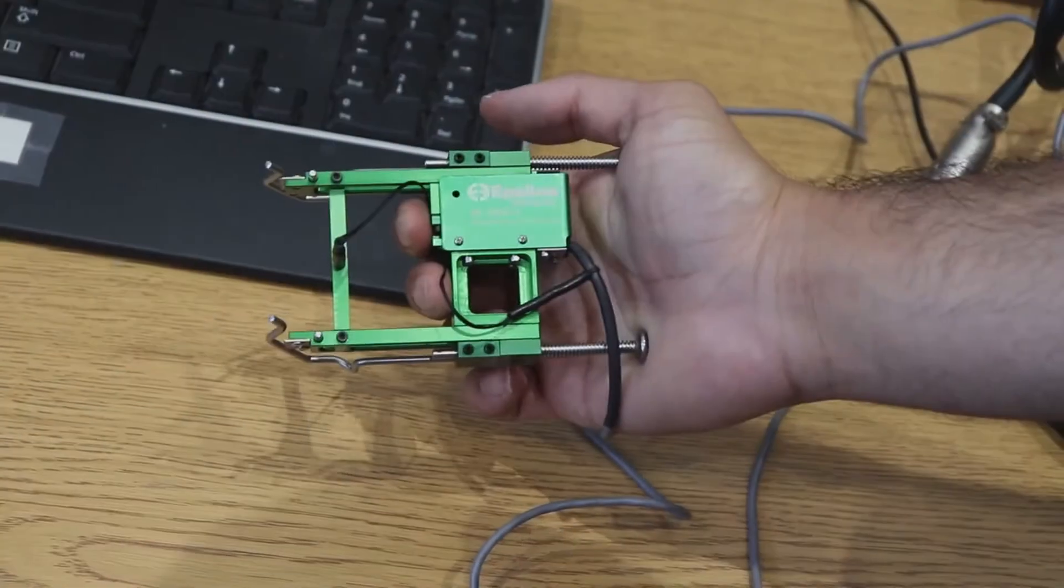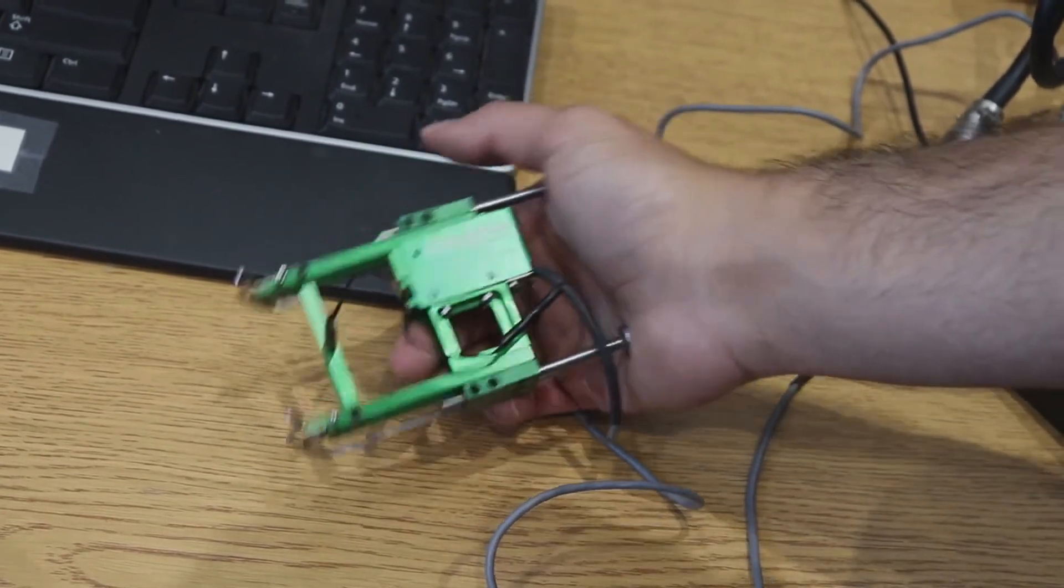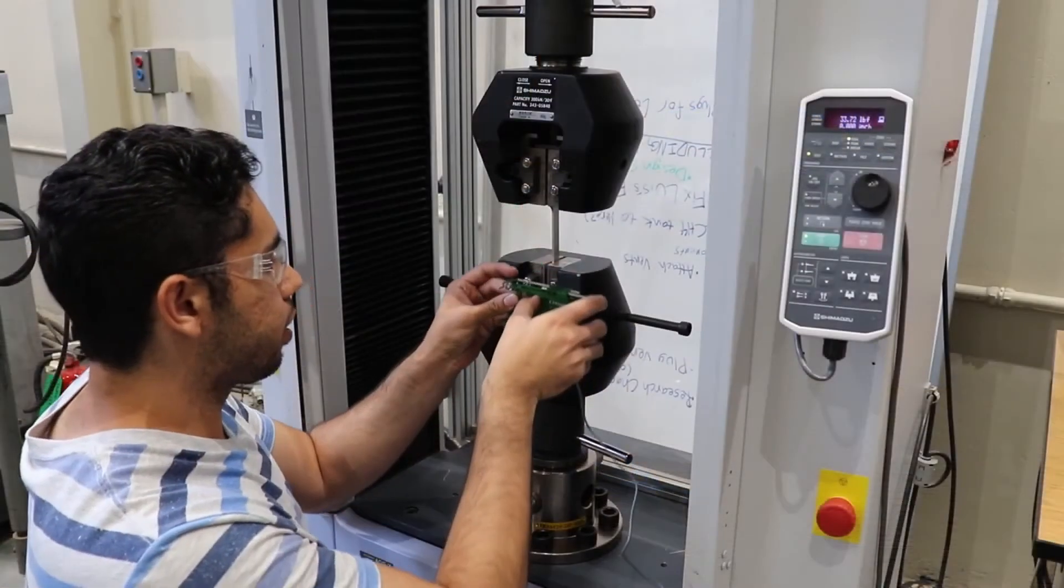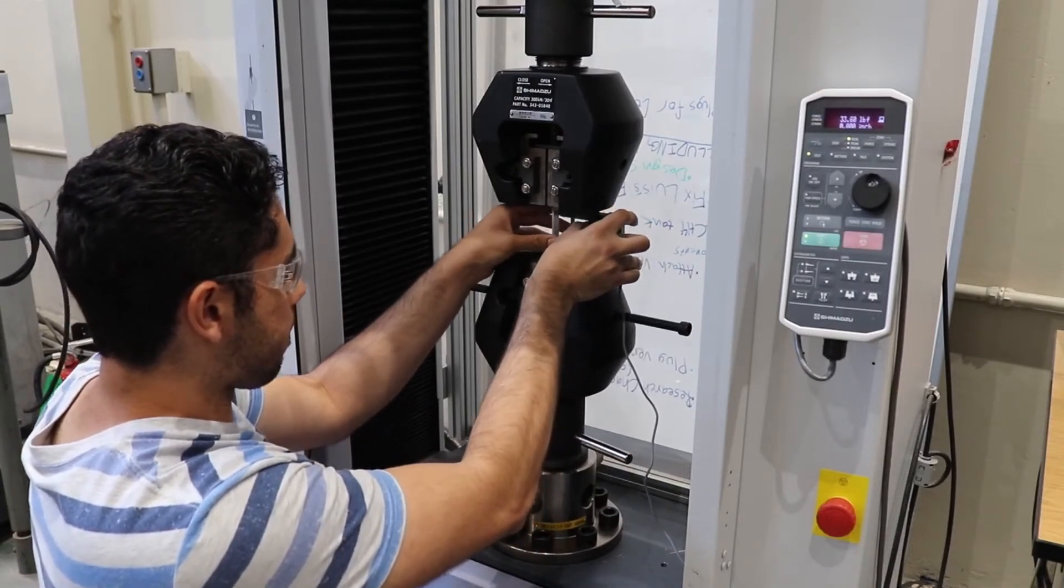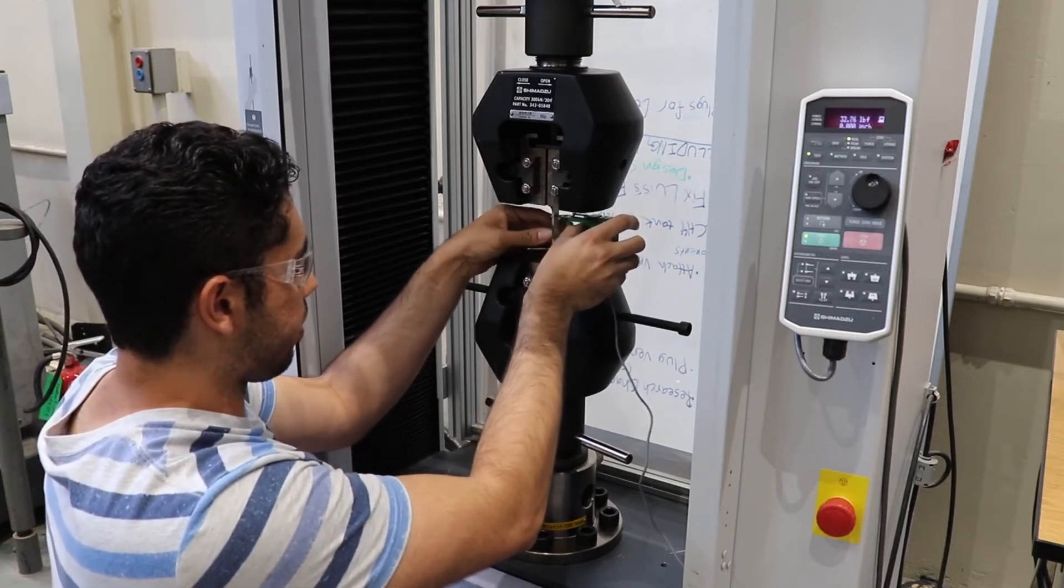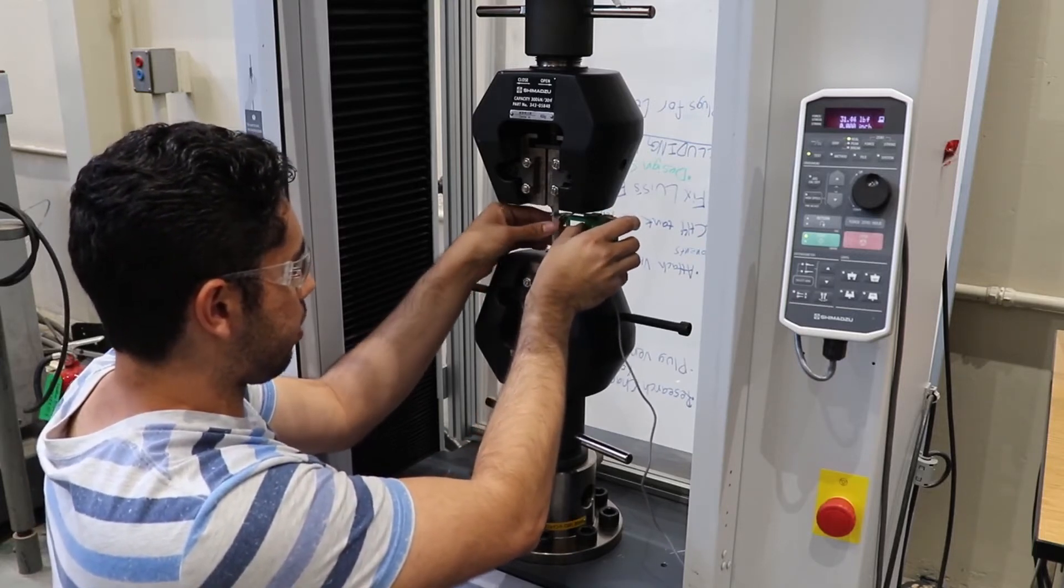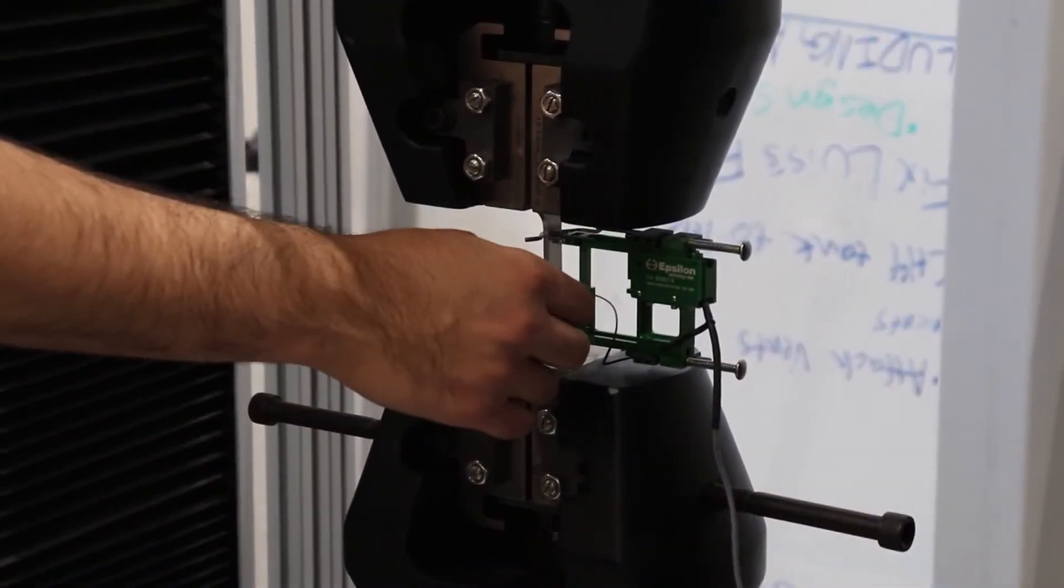Now that our specimen is preloaded, we can attach the extensometer. We attach the extensometer to the two-inch section in between the jaws. Now we can pull the pin on the extensometer and set it aside.